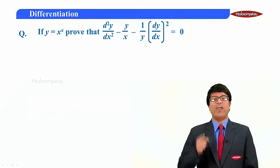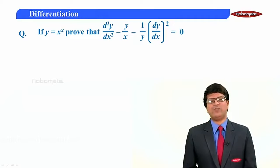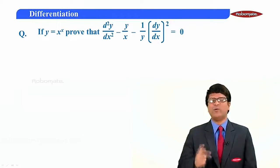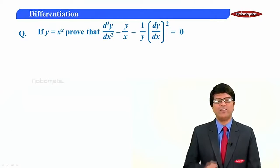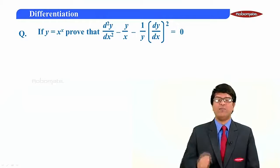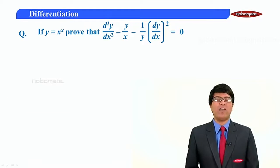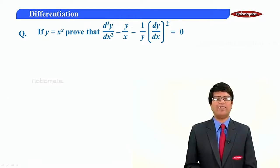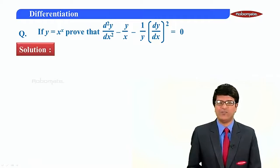The problem says: if y is equal to x raised to x, prove that d²y/dx² minus y/x minus (1/y)(dy/dx) the whole square is equal to 0.